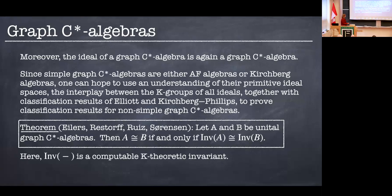And so this actually is a remarkable result due to Eilers, Restorff, Ruiz, and Sørensen, who managed to prove a classification result for all unital graph C-Star algebras. So it doesn't matter how many ideals they have, they can be far from simple, and they do have this nice classification result. And this invariant that they use is some sort of K-theoretic invariant. So it's basically K-theory, but then you have to take into account K-theory of ideals and how these things all link up. So in principle, it is computable. I personally wouldn't necessarily want to do it if you just gave me an arbitrary graph, but this is really quite remarkable, actually. And very useful for us in this talk.